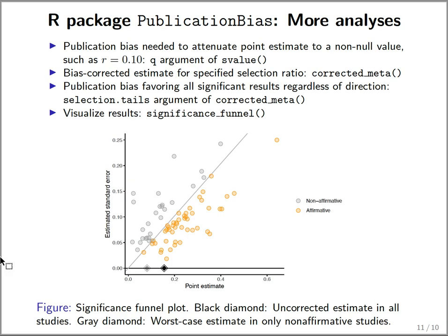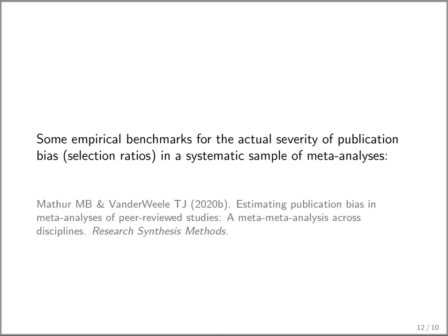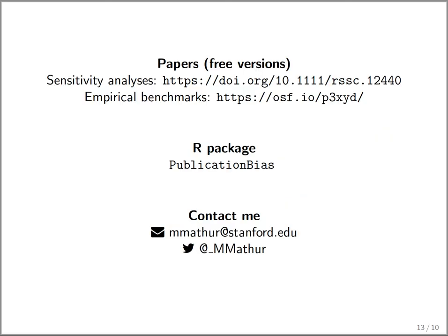The R package can do other things: you can shift the point estimate to values other than 0, do bias-corrected estimation for a specific selection ratio, consider other mechanisms of publication bias, and make visualizations showing the difference between the worst-case and naive estimates. Interpreting these analyses depends on thinking about how much publication bias is actually plausible in practice — we have an empirical paper providing benchmarks for that. Links to the papers, the R package, and contact information are provided.